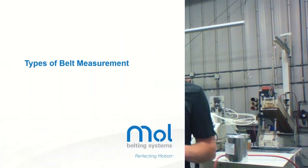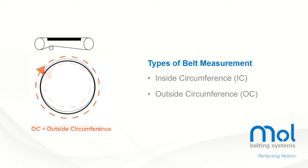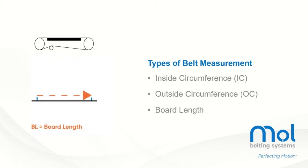Today we're going to be working through some belt measurements. Common measurements include inside circumference, which is taken from the inside or bottom portion of an endless belt, or it would be the measurement of a conveyor that does not yet have a belt installed. Outside circumference is the top surface of an endless belt. A board length measurement is when that belt is laid flat with a standard tape measurement.